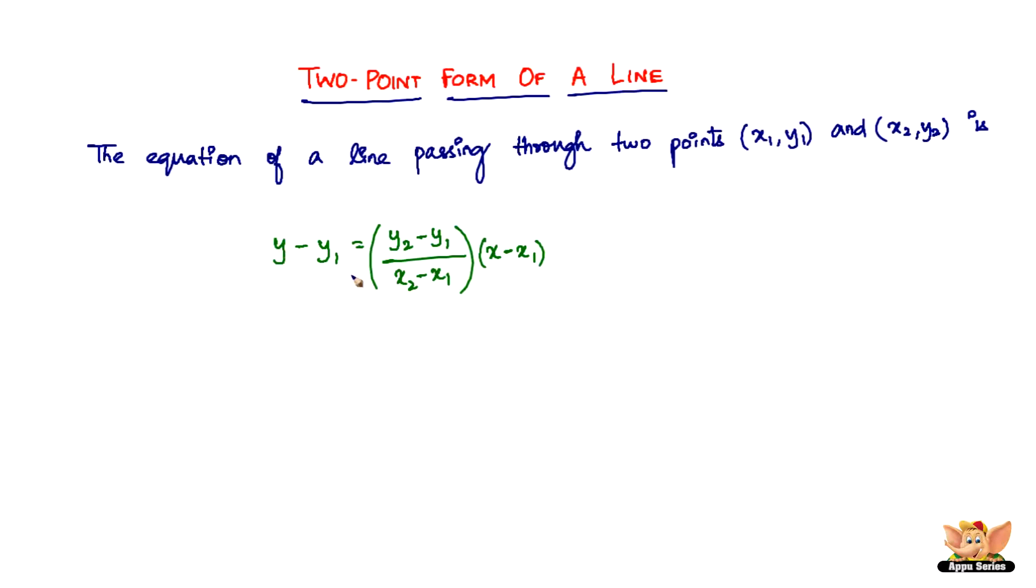y minus y1 equals y2 minus y1 divided by x2 minus x1 times x minus x1. And if you notice a little bit more, you can see that this is nothing but the slope, m.